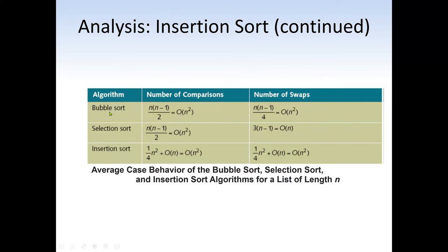Bubble sort also gives us O(n²). Selection sort is O(n²), insertion sort is O(n²), and bubble sort is the slowest — it has more total comparisons than selection sort. In general, insertion sort is better than selection sort, and selection sort is better than bubble sort. But on average, all three have the same O(n²) Big O notation.